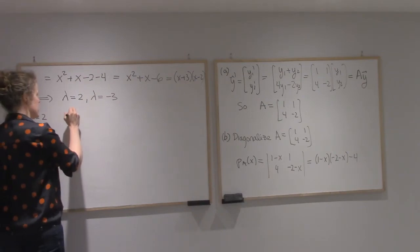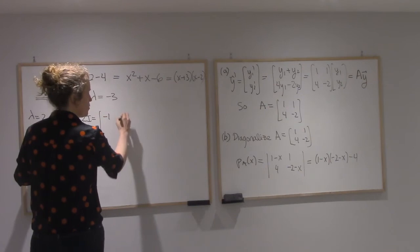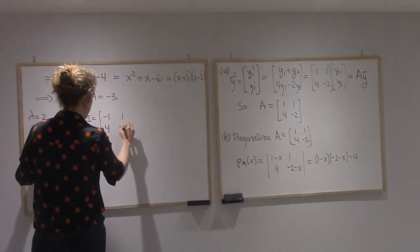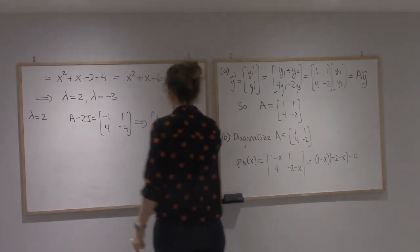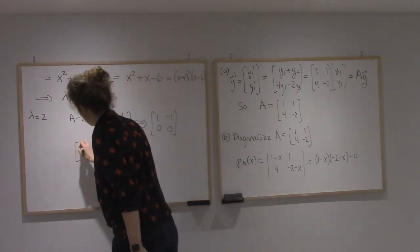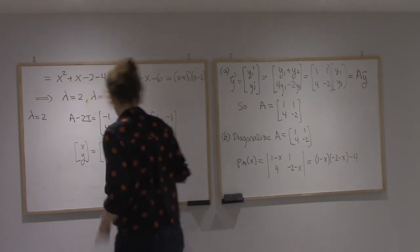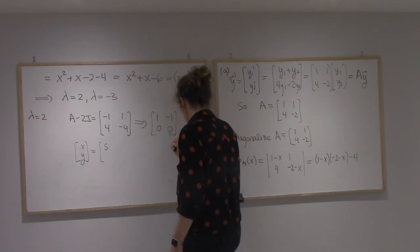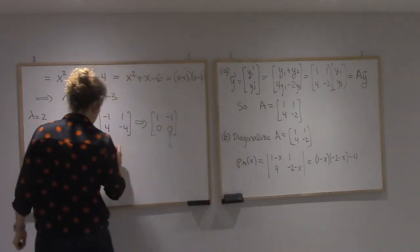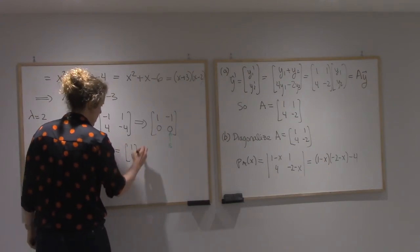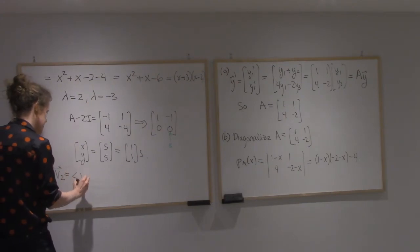So for lambda equals 2, A minus 2I would be [-1, 1; 4, -4], which reduces to [1, -1; 0, 0]. So I will have x equals y equals s. I have a free variable here, so x and y are both s. So I get s times (1, 1). So my first eigenvector is (1, 1).